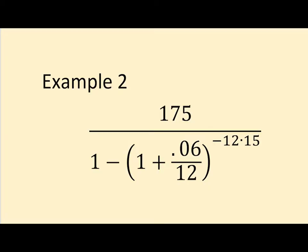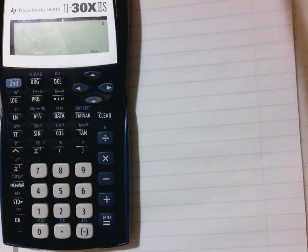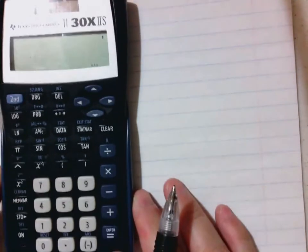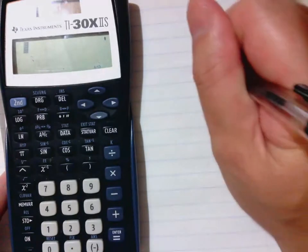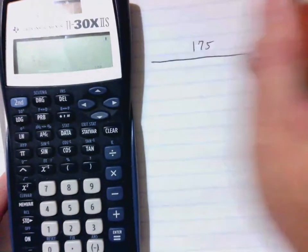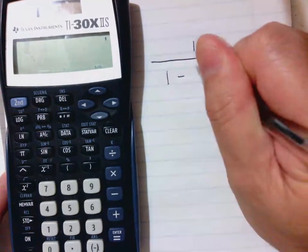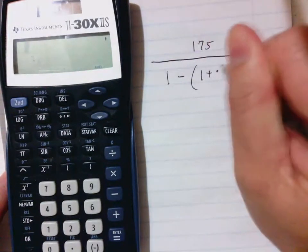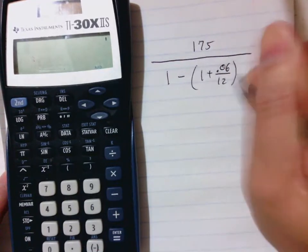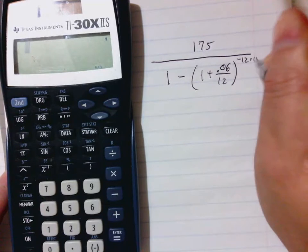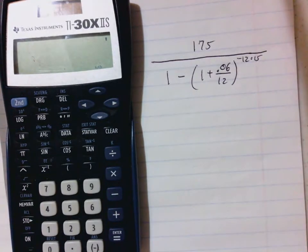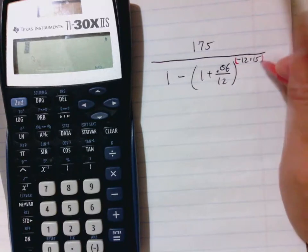All right, next example. This example shows what happens if the previous answer is actually on the second part of the big long calculation, and so it doesn't lend itself easily to just piling another computation on top of it. Now let's take this monthly payments formula. So let's say 175 divided by all of 1 minus (1+0.06÷12) to the power negative 12×15.